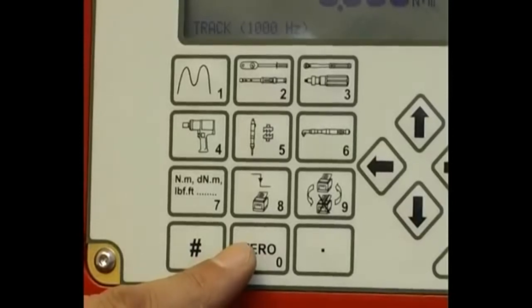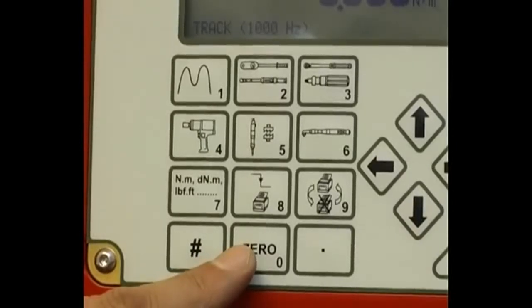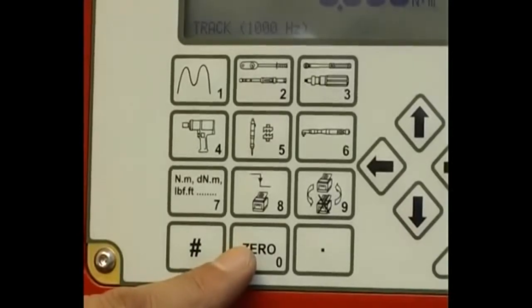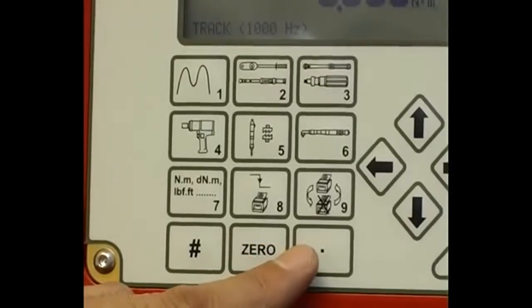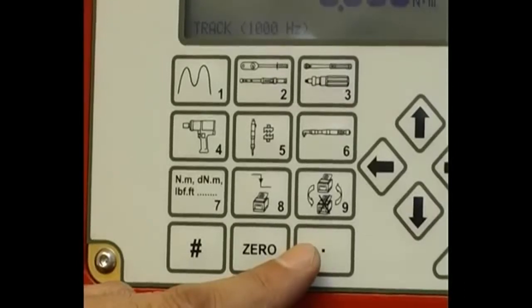Zero button acts as an instrument zero in track mode and acts as a memory reset in any other operating mode. And finally, this button enters the decimal point in any data entry menu.